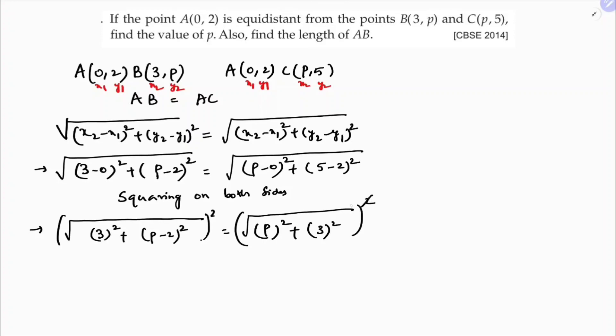Again whole square. Square and root, square and root cancel. So 3 square is 9. Clearly P minus 2, A minus B whole square: A square minus 2AB plus B square.